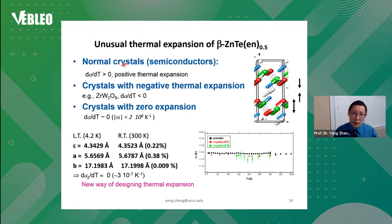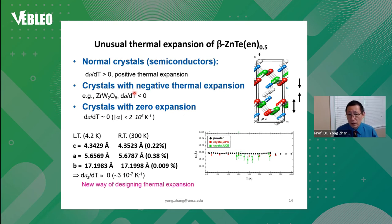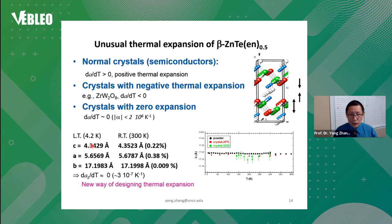This structure also has interesting thermal expansion properties. Most crystals show positive thermal expansion, where the lattice constant increases with temperature. Some materials like zirconium tungstate show negative thermal expansion, but what we really want is zero thermal expansion. For this hybrid, comparing lattice constants at 4K and 300K, the two in-plane directions expand like normal inorganic materials; however, along the stacking direction there is almost no thermal expansion.